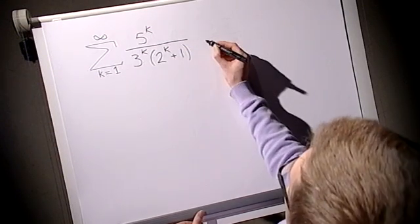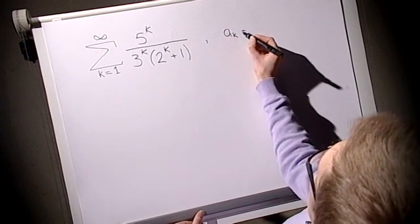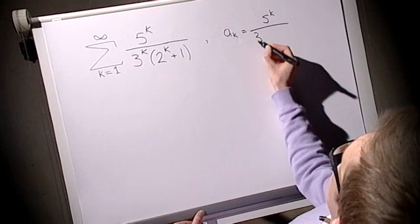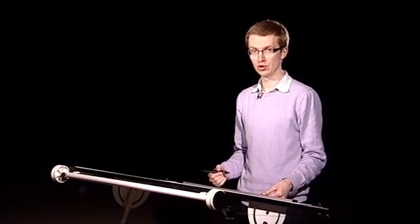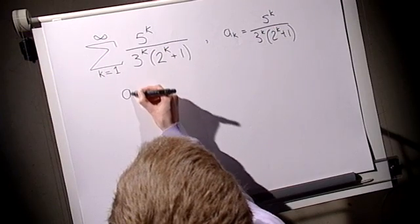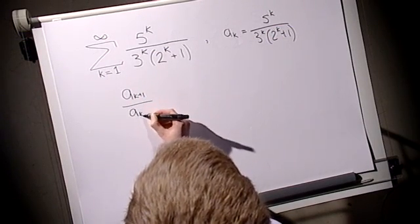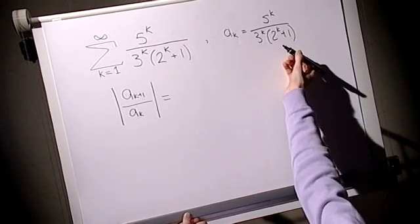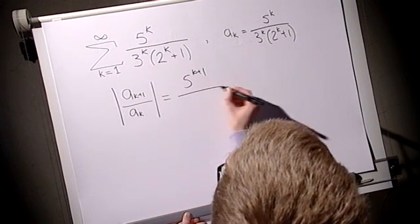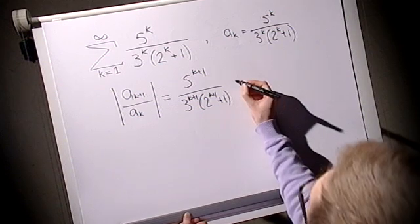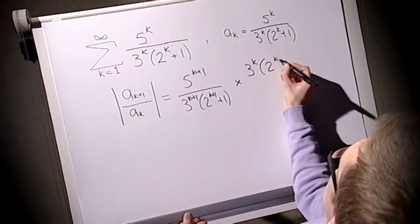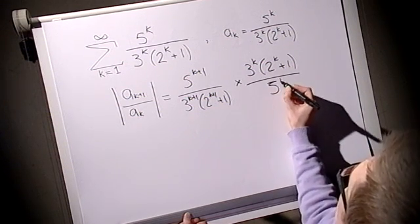So, let's do a second example, slightly more complicated. Here we have an infinite series. What does the general term a_k look like? It's just 5 to the k over 3 to the k times 2 to the k plus 1. We just write down the modulus of a_{k+1} over a_k, and try and establish its limit as k tends to infinity. Let's do that. We have to put k plus 1 in here. 5 to the k plus 1. 3 to the k plus 1. 2 to the k plus 1 plus 1. Divided by a_k. Same as multiplying by 3 to the k times 2 to the k plus 1. All over 5 to the k.